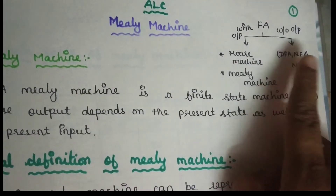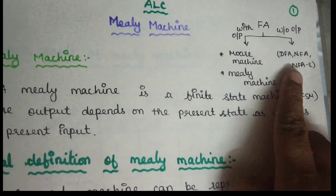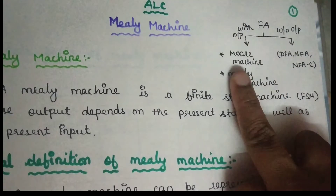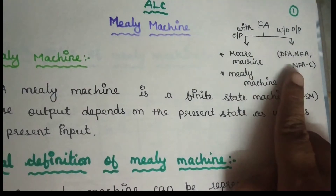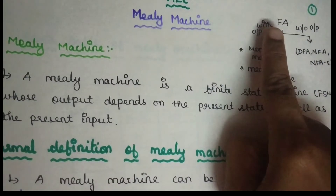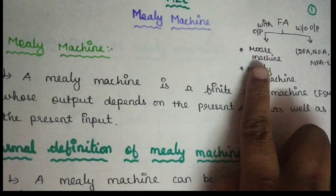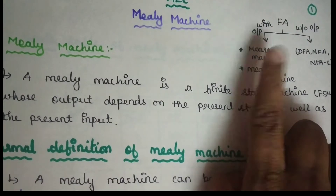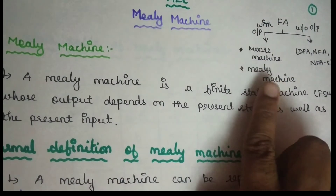As we discussed in the previous video, finite automata without output can be classified as Moore machine and Mealy machine.